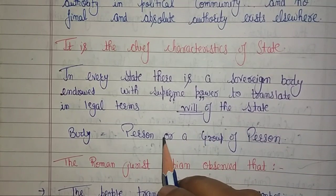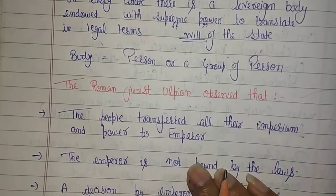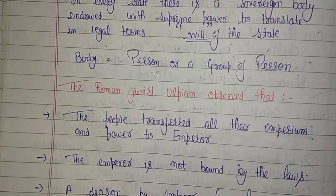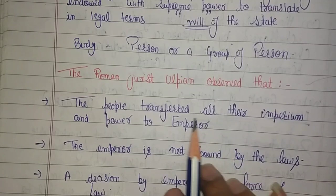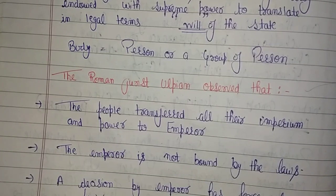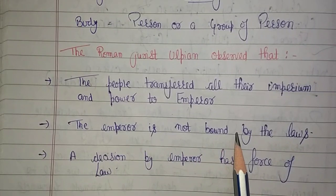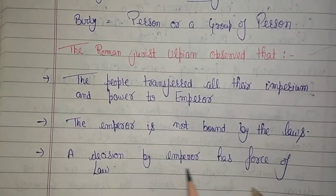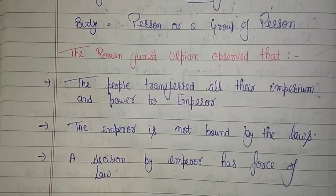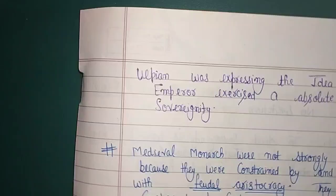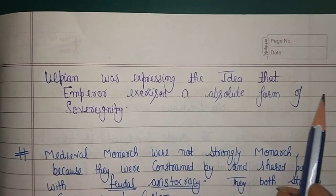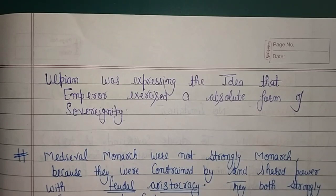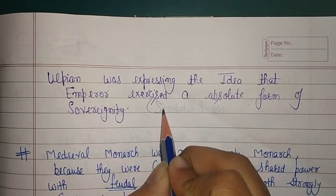Sovereign body मतलब कोई एक person या group of person भी हो सकता है। थोड़ा सा background — Roman jurist Ulpian ने observe किया कि people transfer all their imperium and power to the emperor। वो एक emperor को दे रहे हो, एक raja को। The emperor is not bound by the law, and a decision by the emperor has the force of law — वो एक कानून बन गया। Ulpian was expressing the idea that the emperor exercises an absolute form of sovereignty।